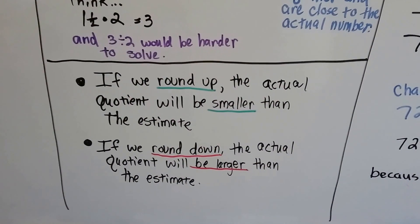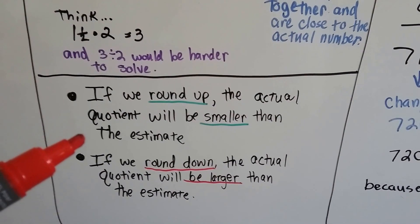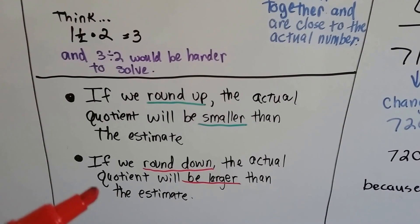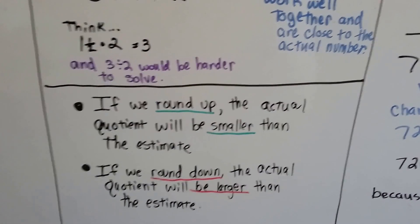If we round up, the actual quotient will be smaller than the estimate. If we round down, the actual quotient will be larger than the estimate.